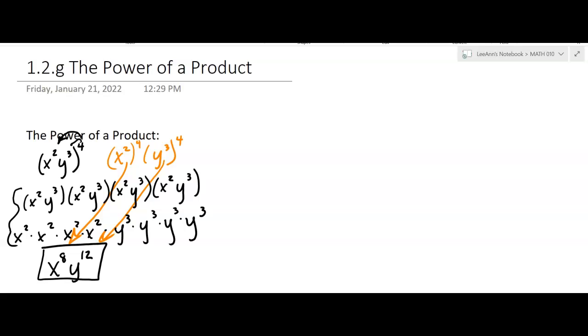Okay, now here's the rule, how it looks. We say if you have ab to the nth, this is the product they're talking about. So you have two different bases that are being multiplied together, and they're in parentheses, and then there's this exponent on the outside. Well, then that equals a to the nth, b to the nth. Okay, so that's the rule.